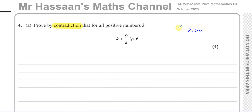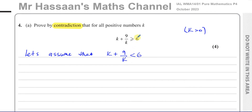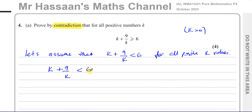The first step is to assume the opposite. Let's assume that k + 9/k is less than 6, for all positive values of k. That's the contradiction of the statement k + 9/k ≥ 6. Now this assumption will lead us to some algebraic expression which hopefully will show it doesn't make sense.